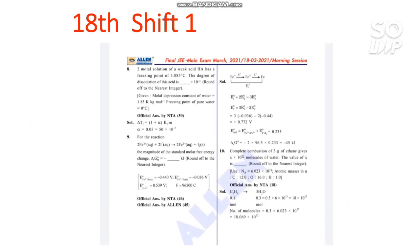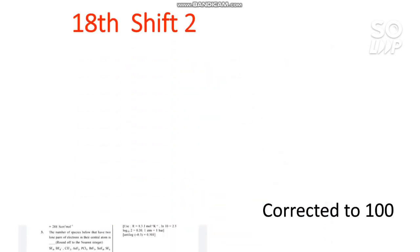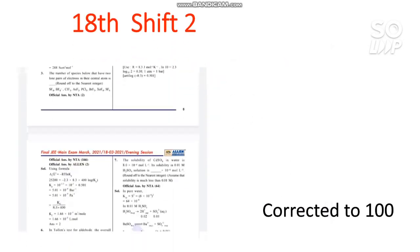The official answer by NTA for question number 9 is 46, and that remains the same — it has not been changed to 45. Many institutes say the right answer should be 45, but the final answer by NTA is 46 and that will be considered for evaluation. If you have put 46, you will get the marks.